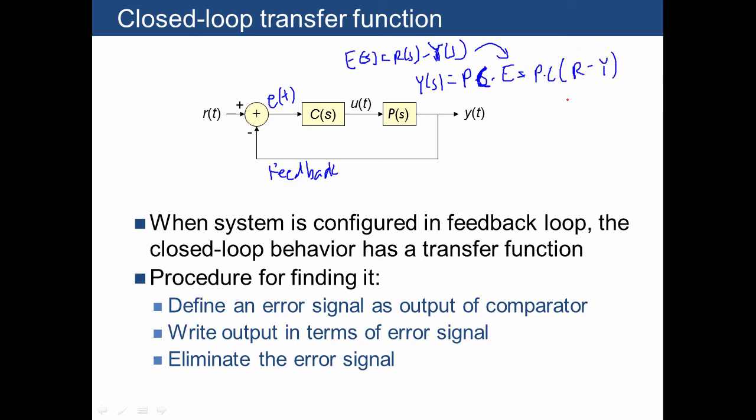And if we collect our terms for Y, we get 1 plus C times P times Y is equal to C times P times R. In other words, Y of S divided by R of S is equal to C times P divided by 1 plus C times P. This is called the closed-loop transfer function.